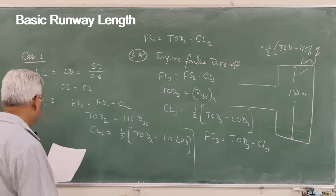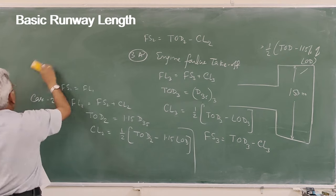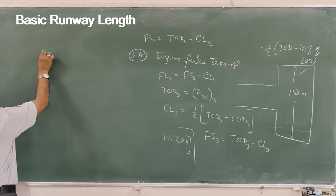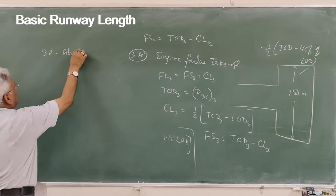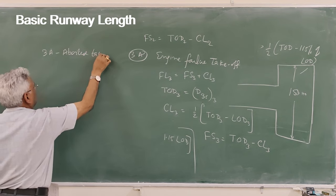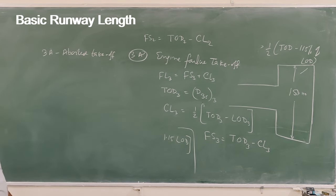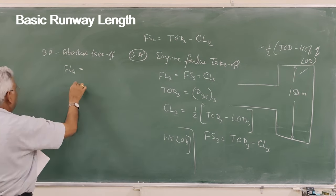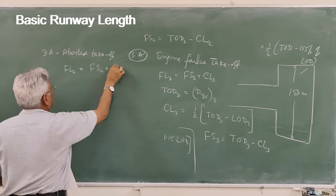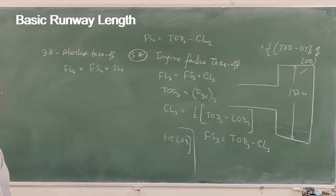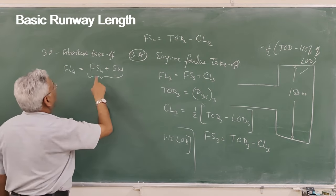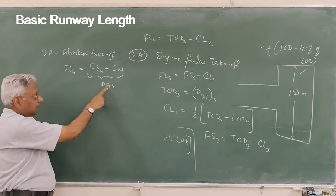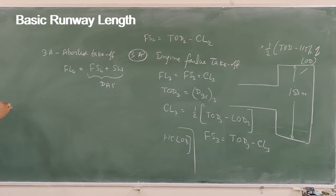Case 4 is the engine failure aborted takeoff, where you need to stop the aircraft. Here the field length is full-strength pavement plus stopway, and this combination is called DAS — the distance to accelerate or stop — which is the required field length for this case.